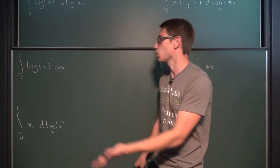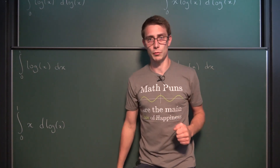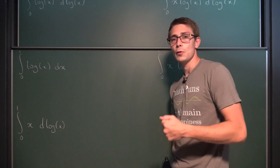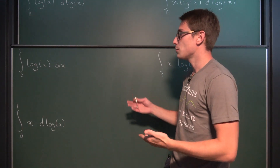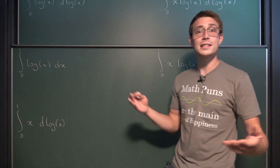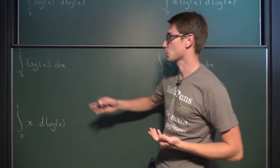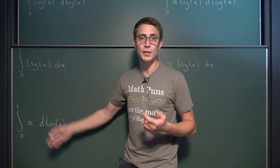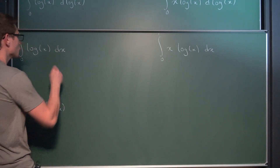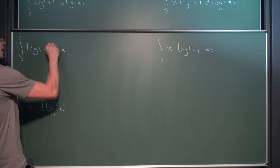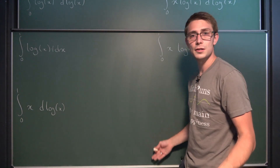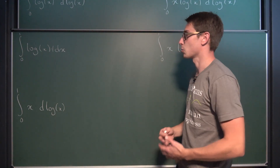A standard, classic one: integrating ln(x) with respect to x. How would you do something like this? Best done with integration by parts using the DI method. It doesn't look like you could use integration by parts because there's only one thing here, but logarithm of x is the same as logarithm of x times one.